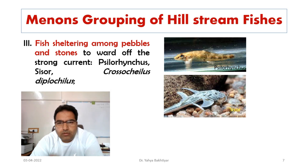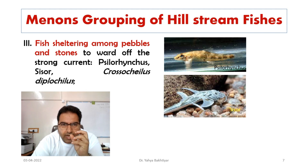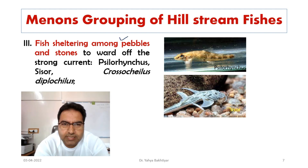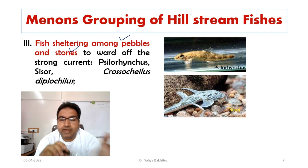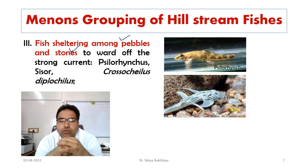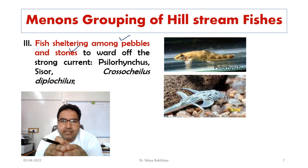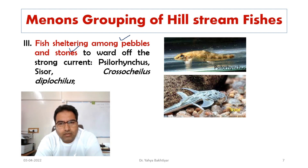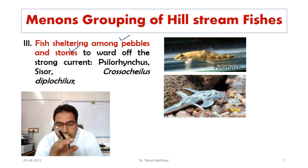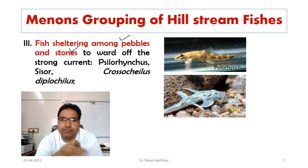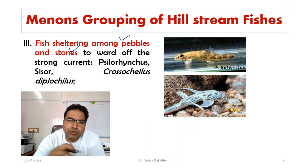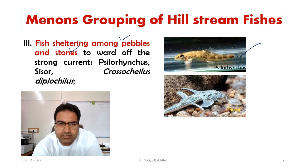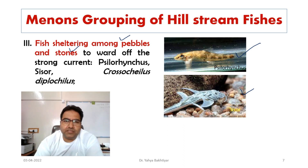Group 3 comprises fishes sheltering among pebbles and stones — they have a burrowing habit. They bury themselves in sand and pebbles to escape the force of fast-flowing rivers. Examples include Silurichthys, Crossocheilus, Crossocylus, and Diplocyclus — fishes which shelter among pebbles and stones to avoid the strong water current.